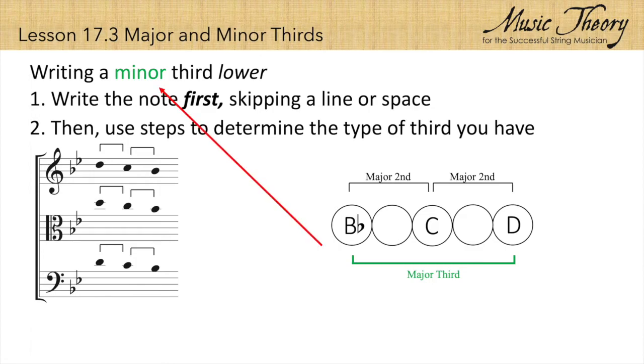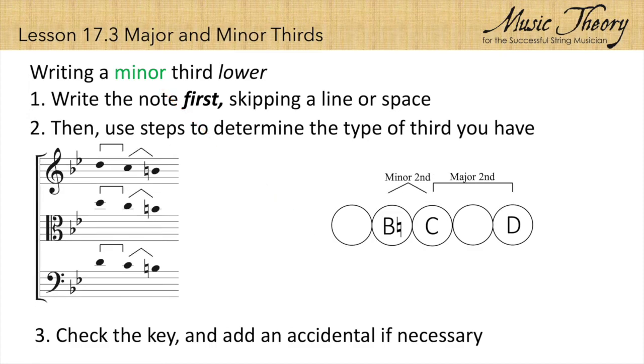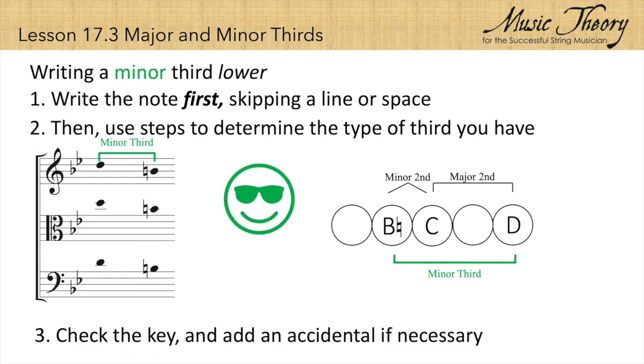But the exercise is asking us to write the note that's a minor third lower. So we need to use an accidental to raise the B flat to a B natural. Now we have a major second and a minor second making a minor third. So to answer the question correctly, we must write a B natural, which is a minor third below D.